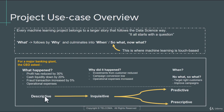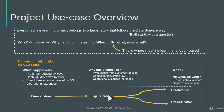Let's understand this with a simple example. What happened? — Profit had reduced by 30%. That's descriptive analysis. Why did it happen? — It's primarily because investments from customers have reduced, operational expenses have increased, and campaign conversions are low. Campaign conversions are low — why did that happen, and when is a customer going to convert? You have a hundred customers and you're trying to understand when a customer will subscribe to a package in the next six months. Having an answer to that is predictive analytics.